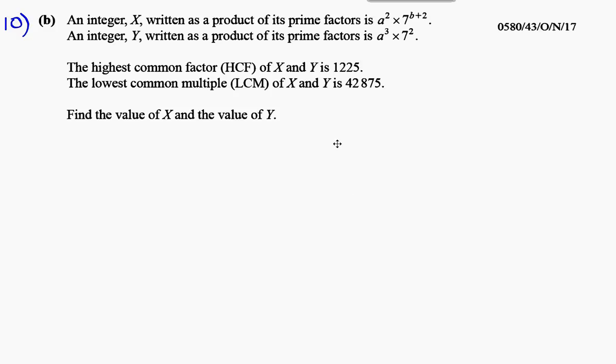Part B tells us that an integer written as a product of its prime factors is a² times 7 to the power of b+2. So X, the integer, is equal to a² times 7^(b+2). And the integer Y is equal to a³ times 7².